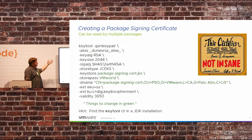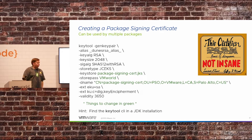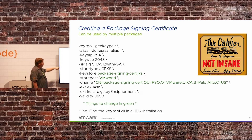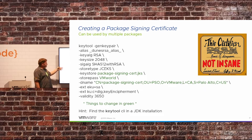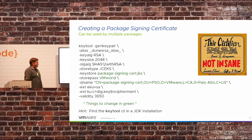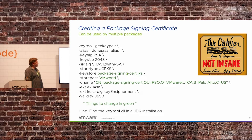Here's how you create a package signing certificate. Everything in black you keep the same; the greens are things you change per organization. You don't need to create this certificate per package — create it once for your team and use it in all your packages. Key things to be aware of: the keystore the certificate goes into, the password to access or write to that keystore, and your own distinguished name for your organization. The certificate will be valid for 10 years, which you can modify. This keytool is provided by the JDK or JRE, so once you have your Java runtime you already have this tool.